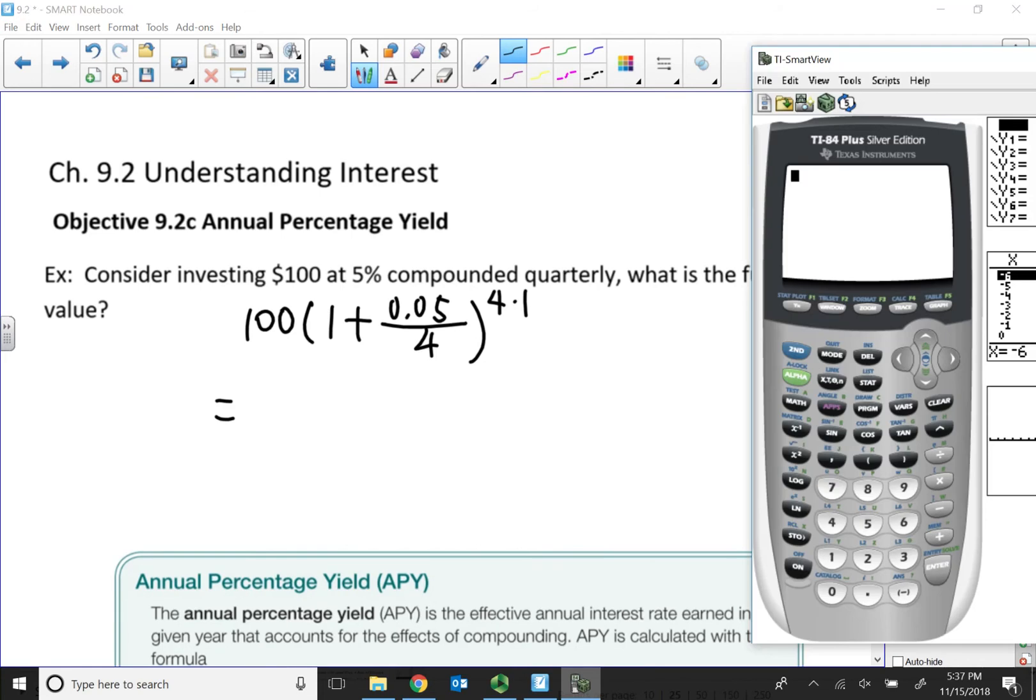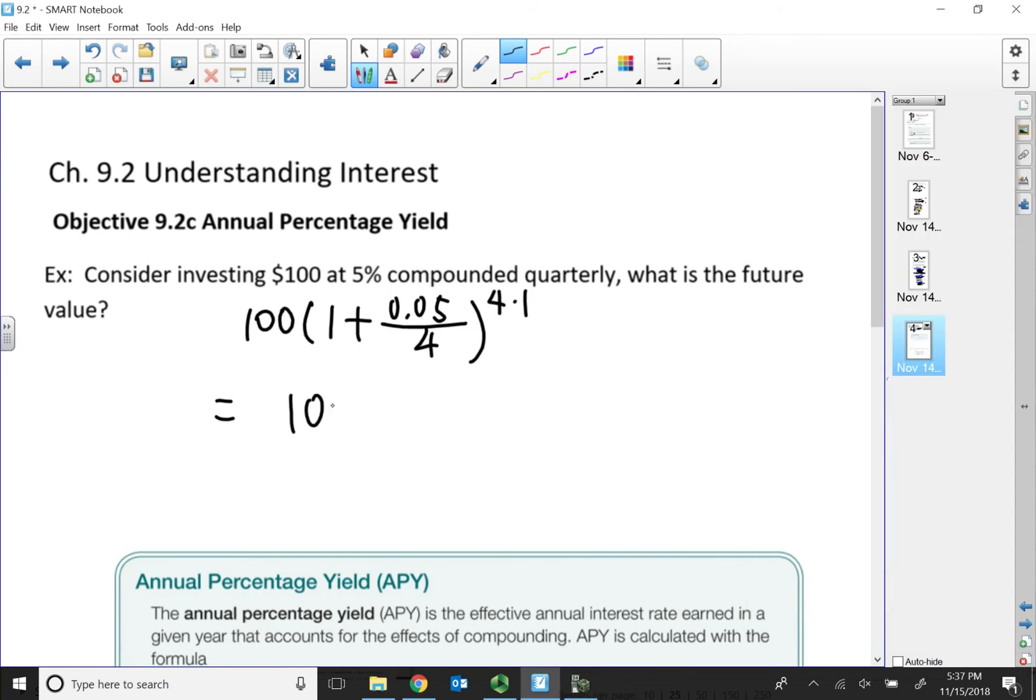Let's see how much money will be in my account after one year. 1 plus 0.05 divided by 4, raising to the 4th power. That's $105.09.